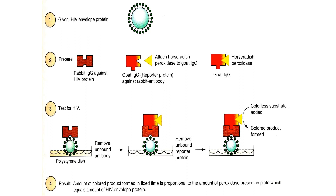This goat anti-rabbit antibody is then linked with horseradish peroxidase. First, we apply the patient's serum on a polystyrene dish and incubate it so that the antigen gets attached. In the second step, we apply the rabbit IgG, which gets attached to this antigen through antigen-antibody reaction. In the third step, we apply a conjugate of goat anti-rabbit IgG to which horseradish peroxidase is attached, followed by addition of substrate for this peroxidase. Peroxidase then converts a colorless substrate into a colored product, and the amount of that colored product is proportional to the amount of HIV antigen present in the serum.